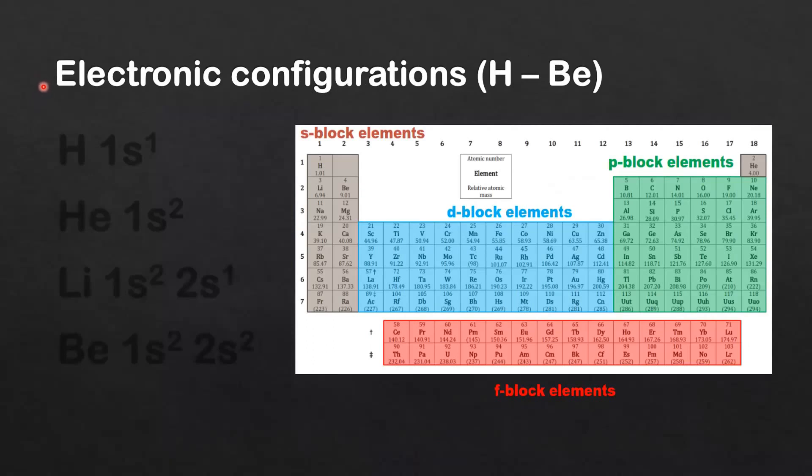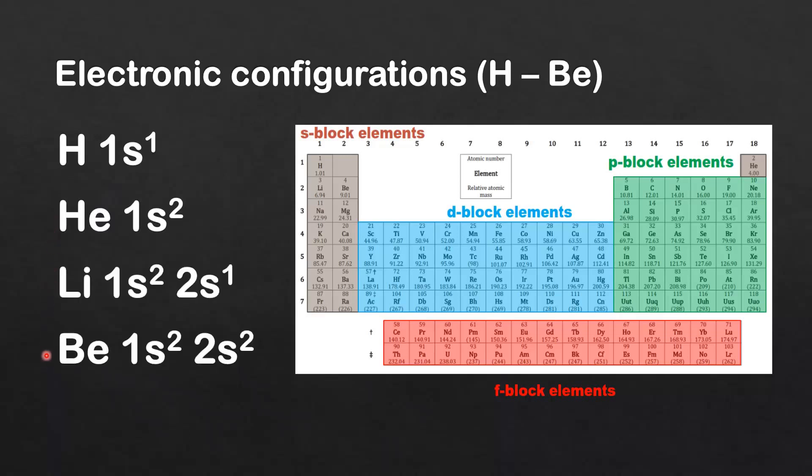Next we'll look at the electronic configurations of hydrogen to beryllium. Hydrogen is 1s¹, helium is 1s², lithium is 1s² 2s¹, and beryllium is 1s² 2s². As you can see, these are all s-block elements because they have their valence electrons in the s sublevel.